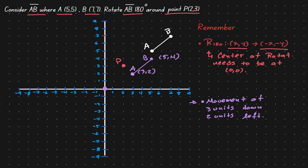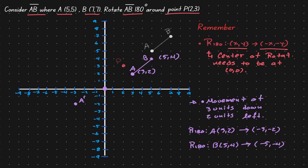Now let's concentrate on these new locations and put less emphasis on the old information. Now that we've moved the whole problem so that the center of rotation is at the origin, we can apply the 180-degree rotation rule. A rotation of 180 degrees on point A gives us its image. Let's place that in our plane. Now let's rotate point B — a rotation of 180 degrees — giving us its image. Let's place that down and connect those points.